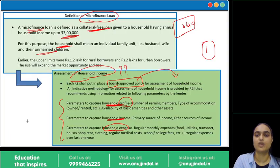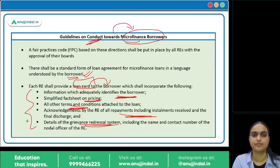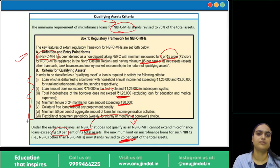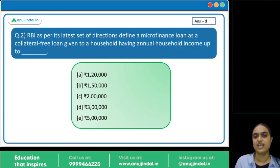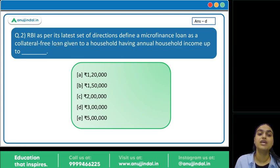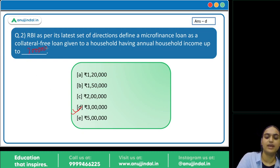Second question: RBI defines a microfinance loan as a collateral-free loan given to a household having annual income up to how much? The answer is D — ₹3 lakh.